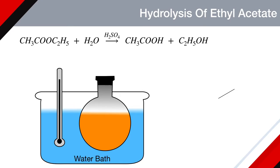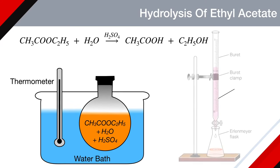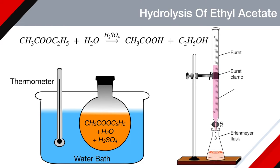In this reaction, as seen from the equation, acetic acid is formed. So, the rate of reaction can be measured by measuring the concentration of acid formed at different time intervals. To find the concentration of acetic acid, we take a small amount of reaction mixture and titrate it against sodium hydroxide or any base. But in this case, there is a small problem: the reaction mixture contains acetic acid and also sulphuric acid, so the equivalence point of the titration accounts for both acids.